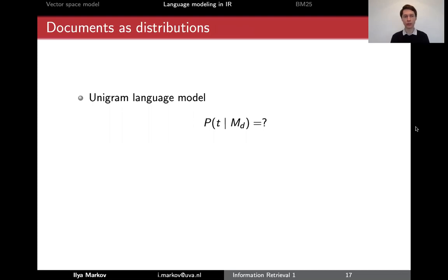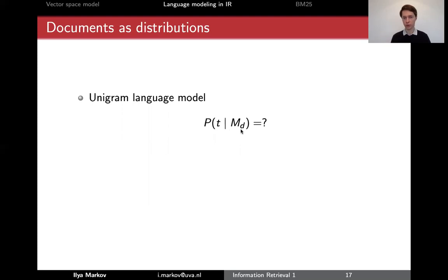Let's talk about unigram language models and how to match documents and queries. We represent documents as distributions over words, and we will denote that as the probability of a term given a model of a document. So a document is a distribution — for every term there is a probability.